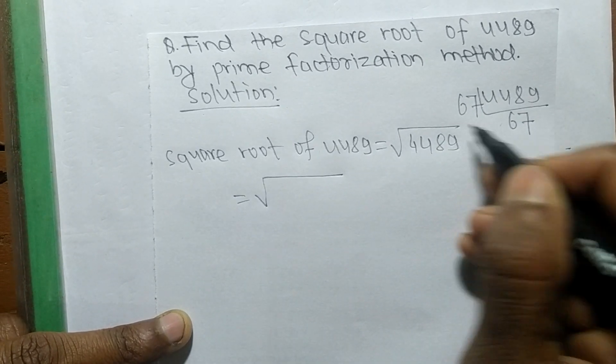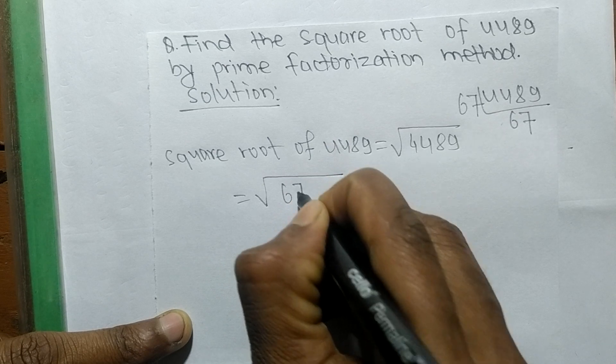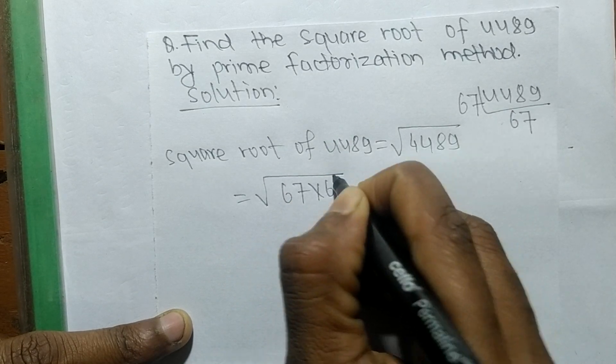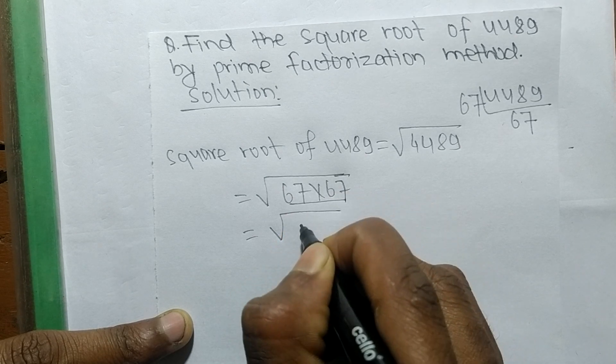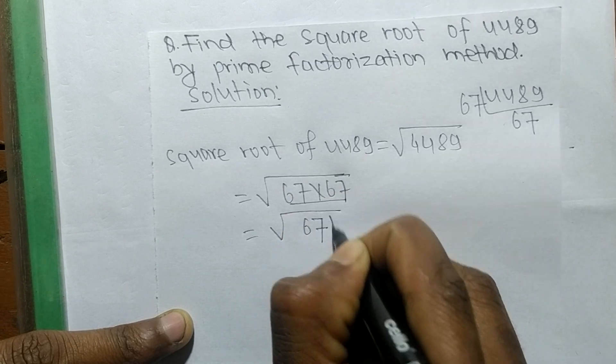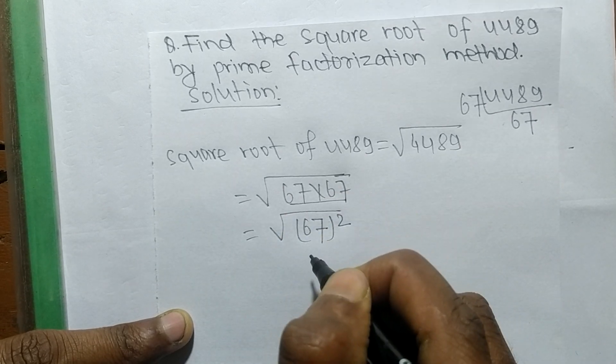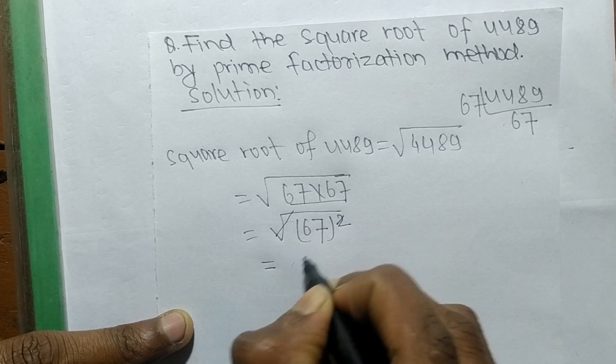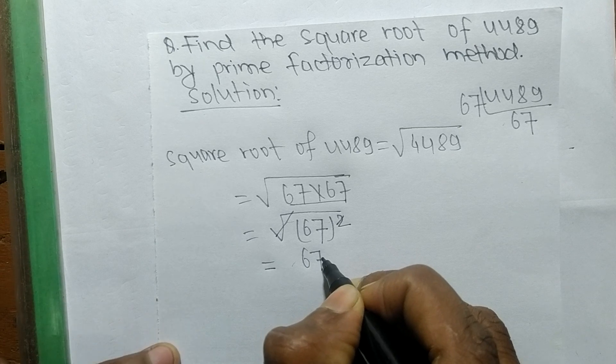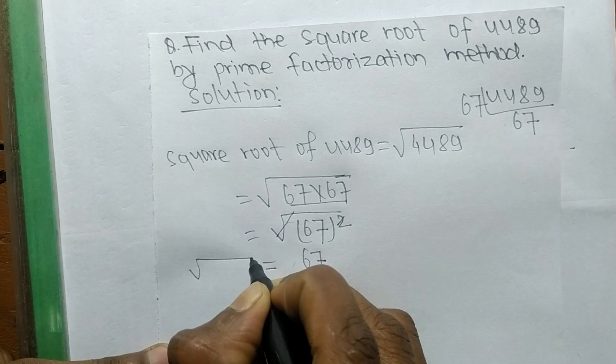Which is 67 times 67. Now, 67 times 67 means it is 67 squared. So a square and a square root cancel each other, so 67 comes out.